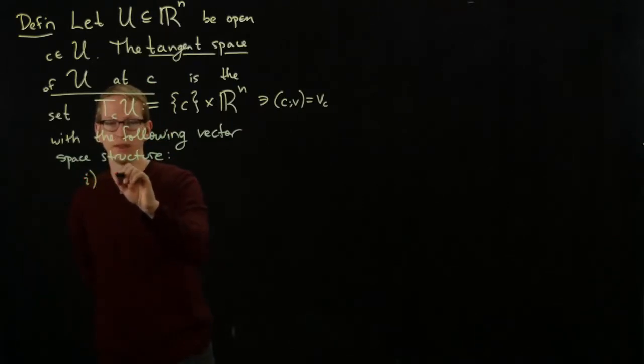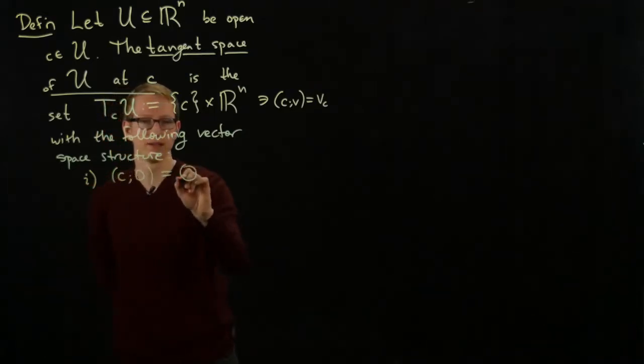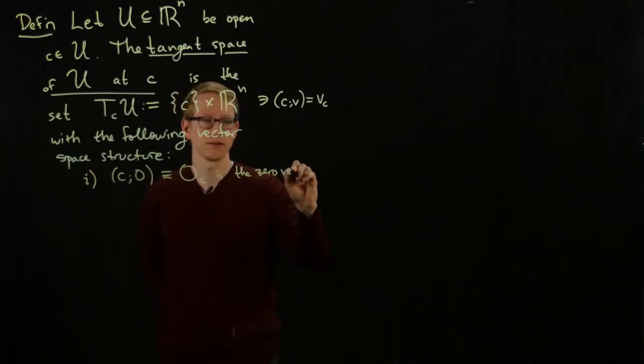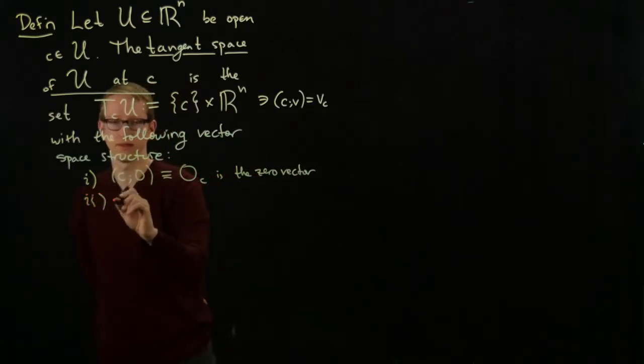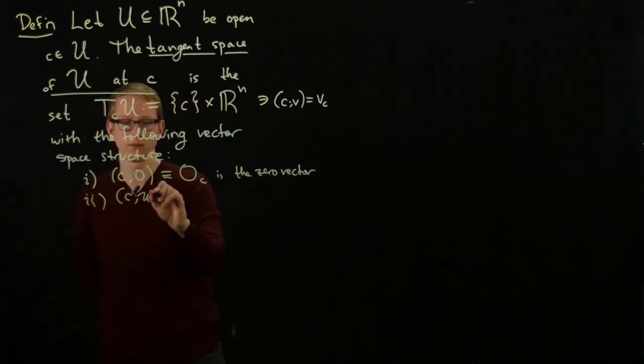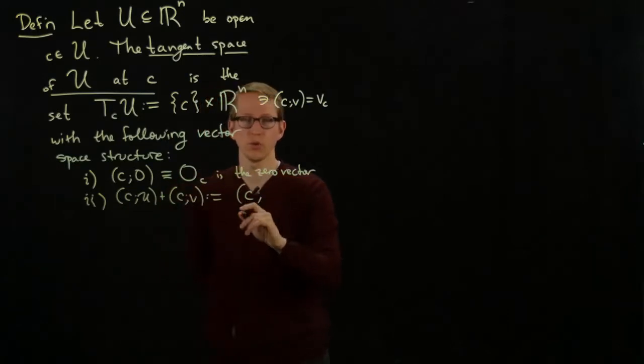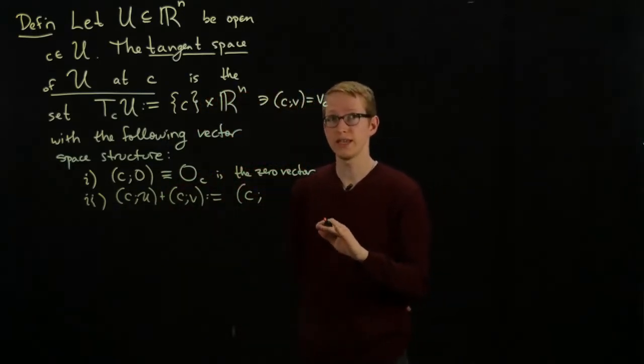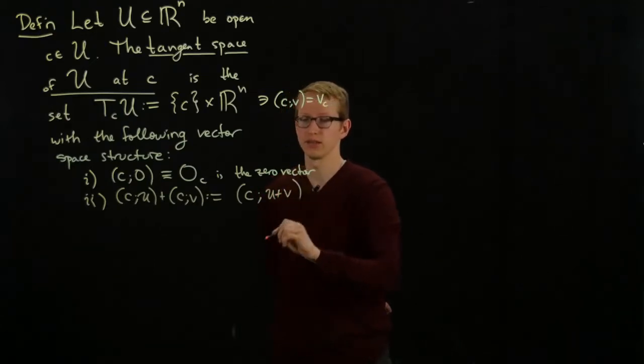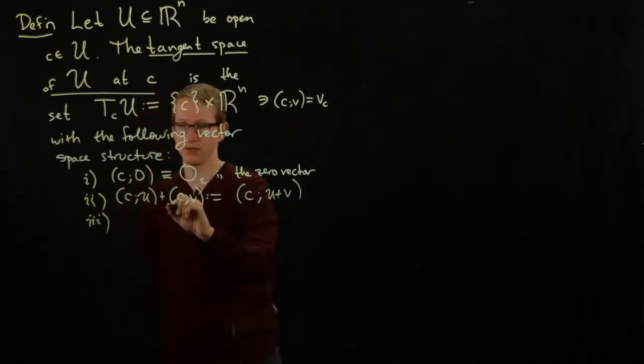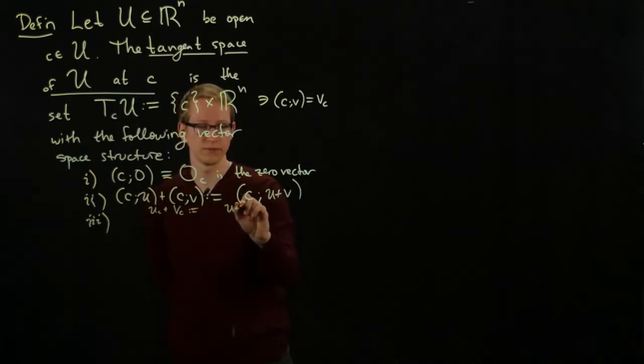First of all, the zero vector (c,0), which we write as 0 subscript c, is the zero vector. Secondly, the sum of two vectors (c,u) plus (c,v) is defined to be - in the first coordinate we leave c alone, we're thinking of c as just a label, and we add the second two components. By the way, we write this also as u_c plus v_c is defined to be (u+v) at c.